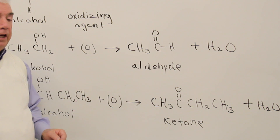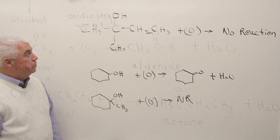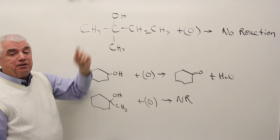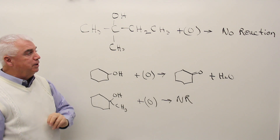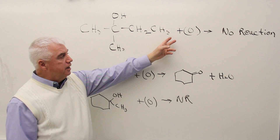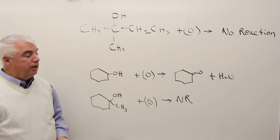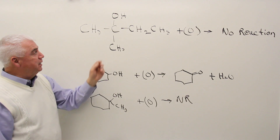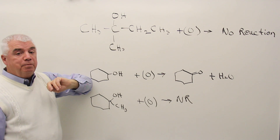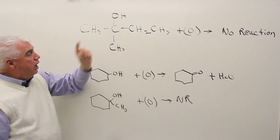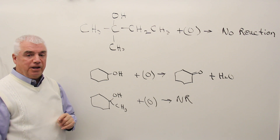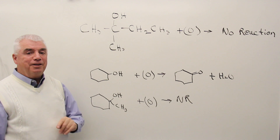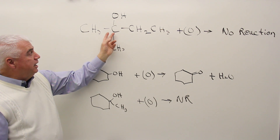Let's look at the oxidation of a tertiary alcohol. Here's the structure of a tertiary alcohol — the carbon that has the OH is attached to three other carbons — plus an oxidizing agent. It turns out there's no reaction; these alcohols can't be oxidized. The OH could be pulled out, but there's no hydrogen on the carbon that the OH is attached to. There are lots of neighboring hydrogens, but that's not the oxidation reaction we've been studying.